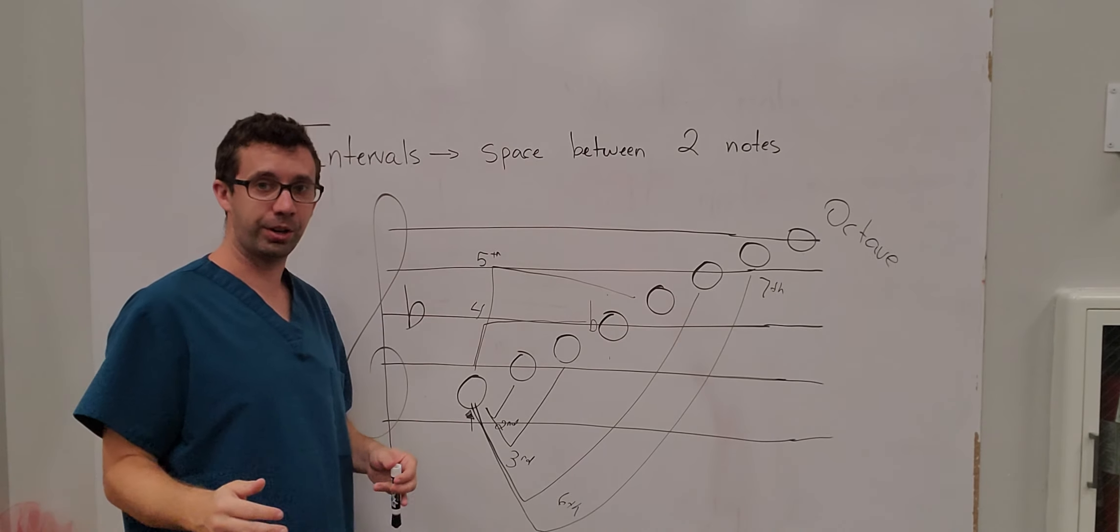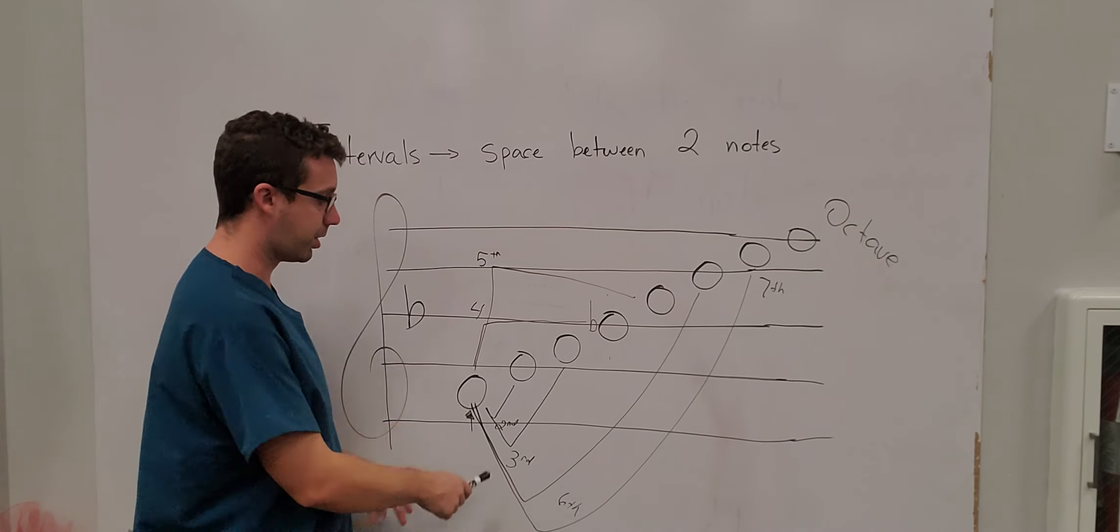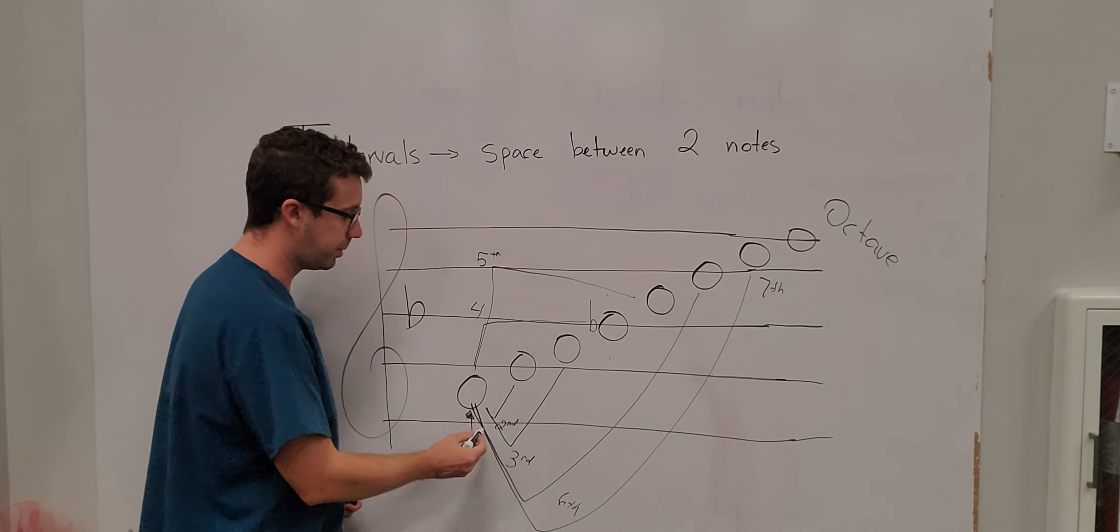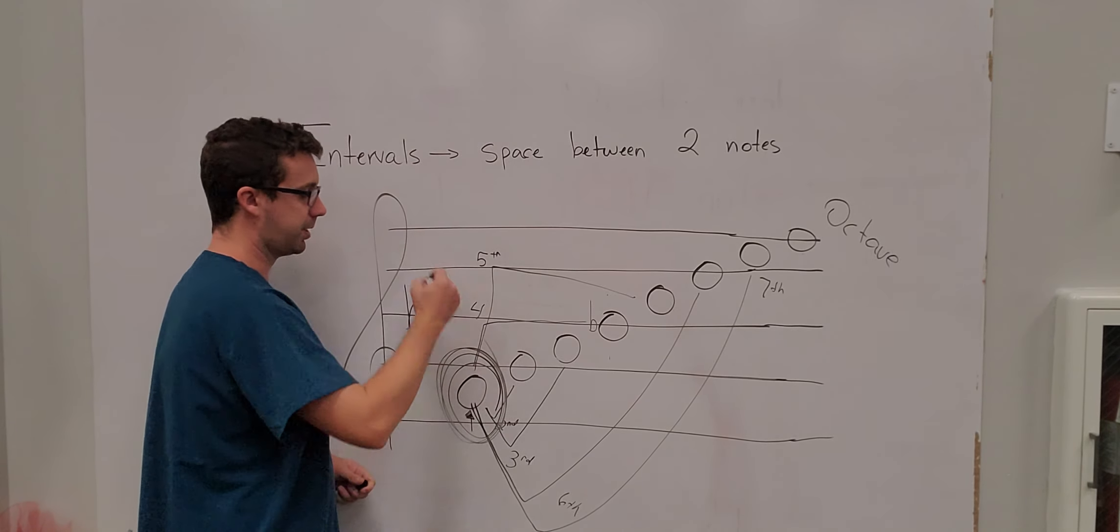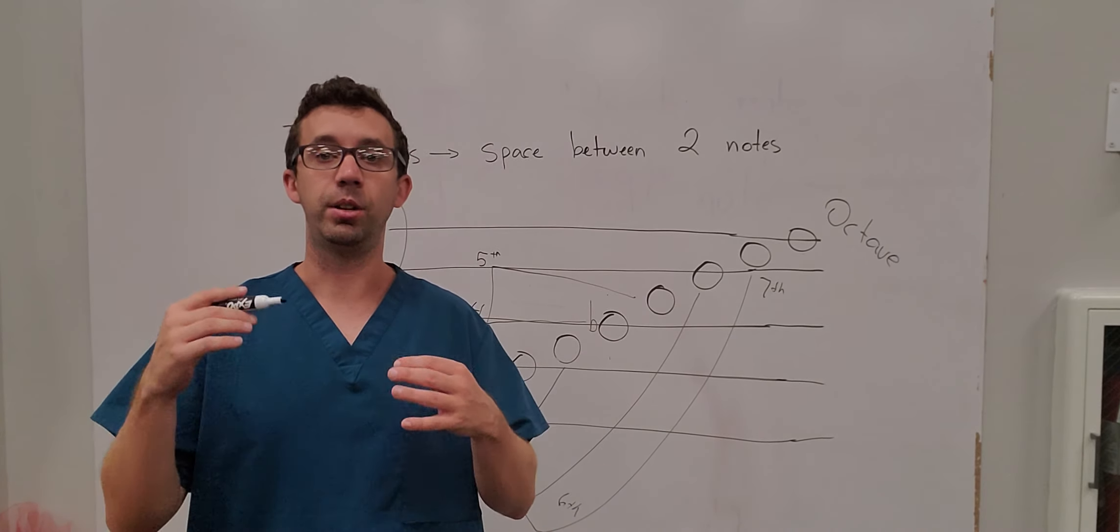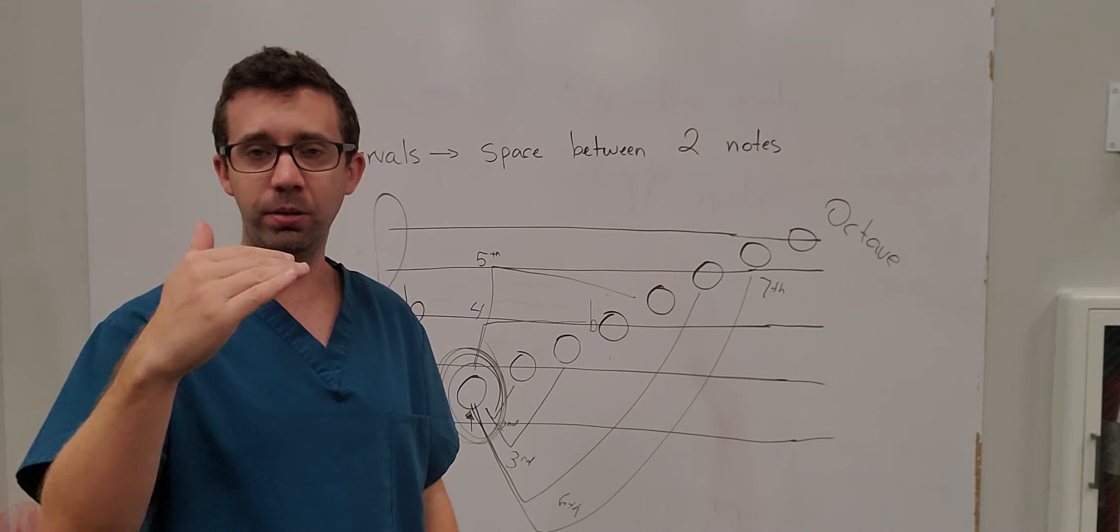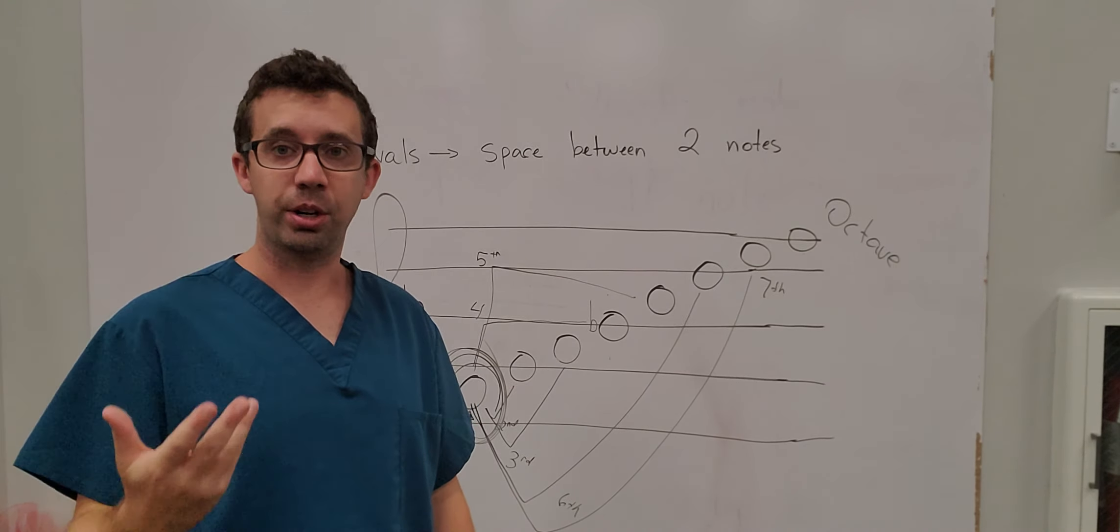So there's definitely a pattern with telling what intervals are based on the bottom note. It all revolves around this note of the scale. Whatever the bottom note is, it doesn't matter what the bottom note is. It all depends on what the bottom note is. And if you just count up from that note, you will get your interval.